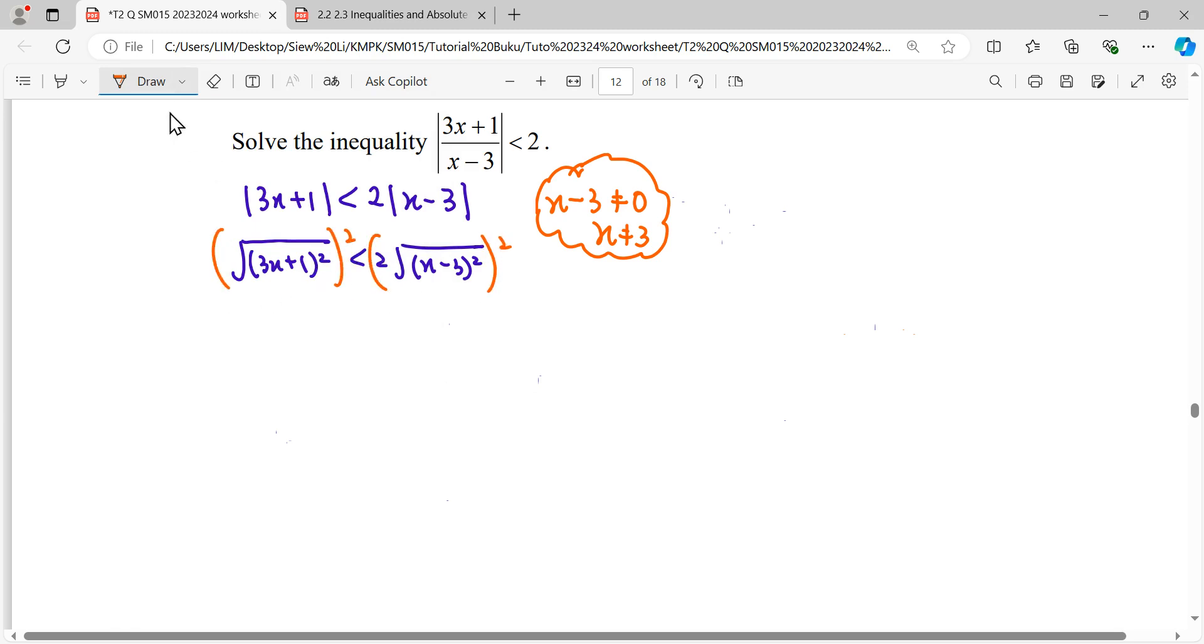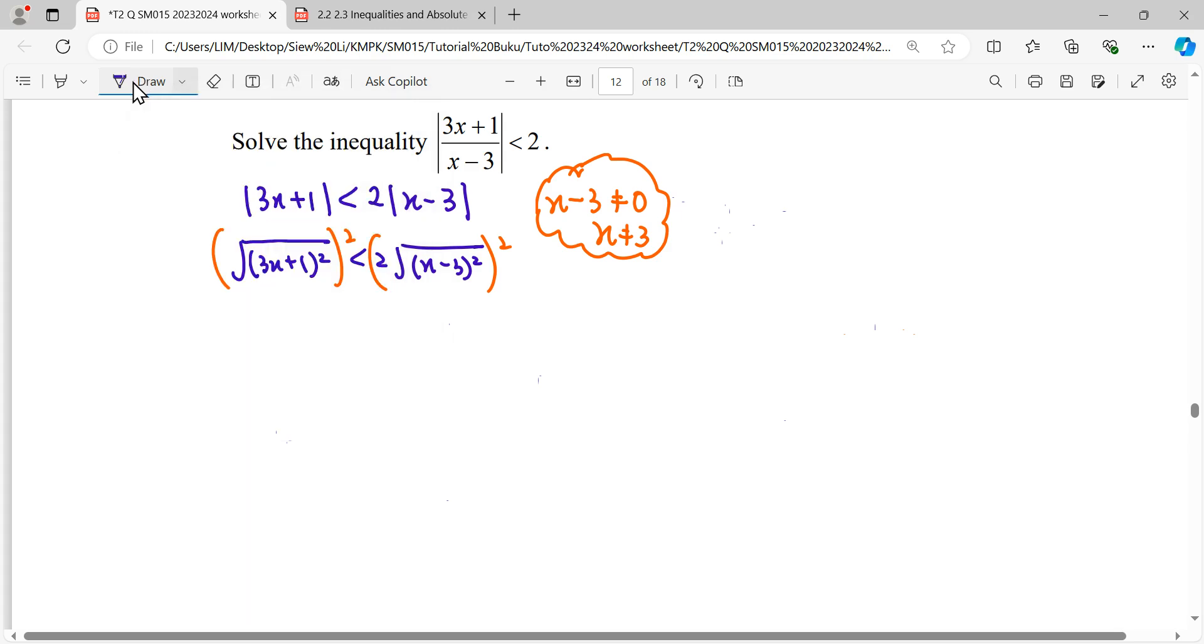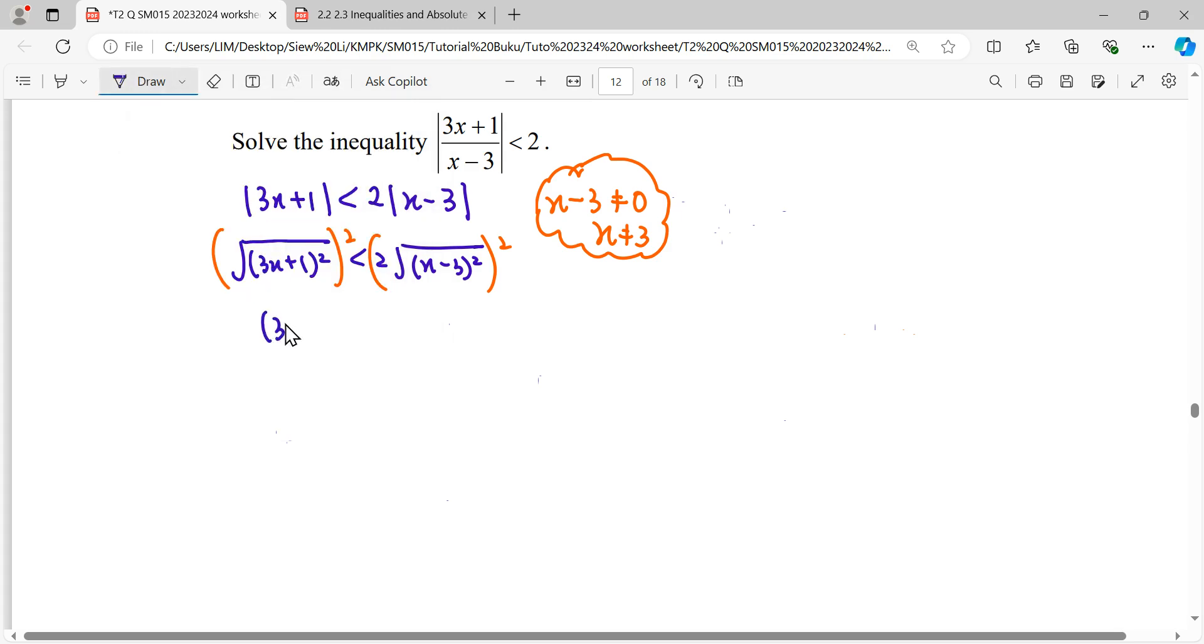Square root squared gives us the term (3x+1)² and this 2² equals to 4, and (x-3)² squared. Then we expand this. Now you can see we have a quadratic inequality, so we need to expand this quadratic and move everything to the left hand side.